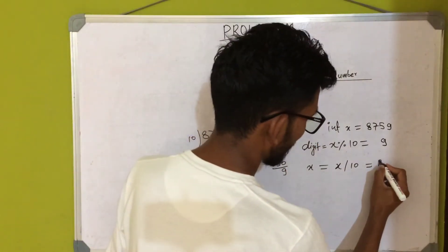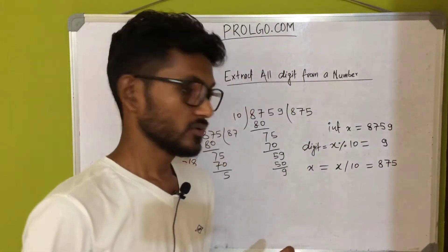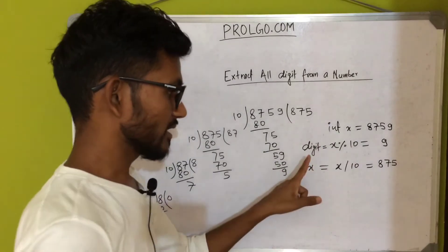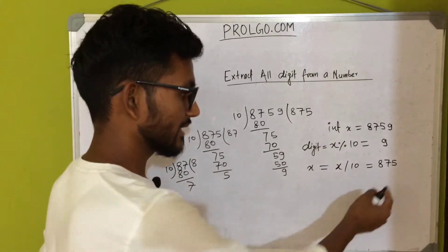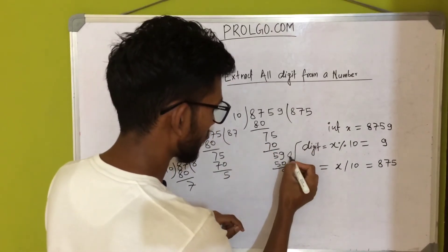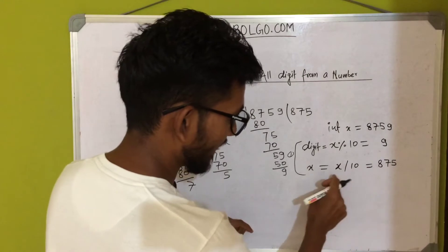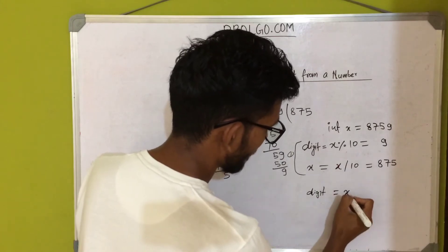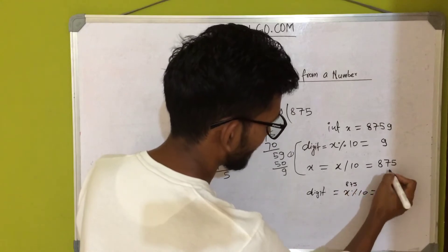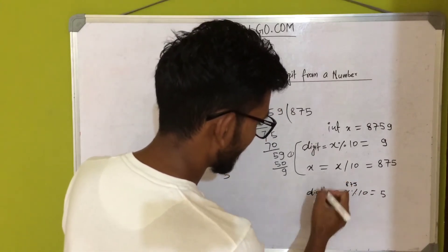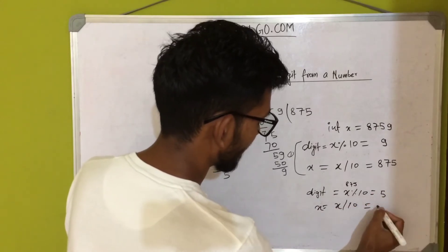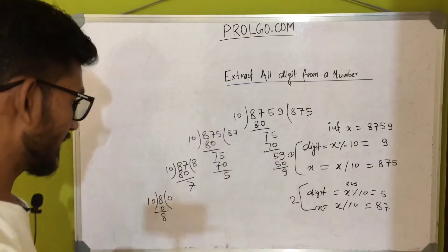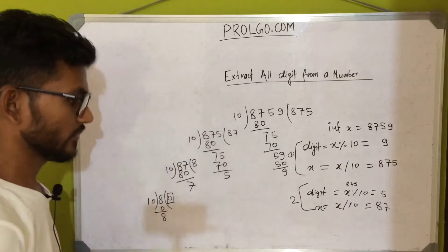Since we are using an integer type variable, the decimal value will be discarded, and we get 875. So first we extract the digit using modulo, then divide the number by 10 to get the next number. We repeat: digit = x % 10 gives 5, then x / 10 gives 87, and so on. We keep dividing the same number until it becomes 0.